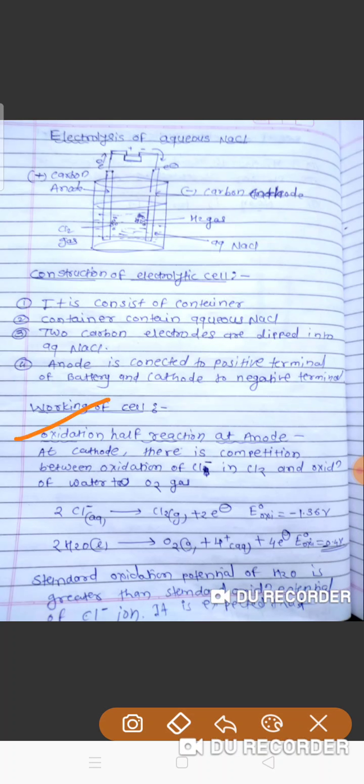Now consider the working of the cell. There are two reactions taking place: an oxidation half-reaction at the anode and a reduction half-reaction at the cathode. At the anode there is a competition between the oxidation of Cl⁻ to Cl₂ and the oxidation of water to O₂ gas. These two reactions are compared to each other.